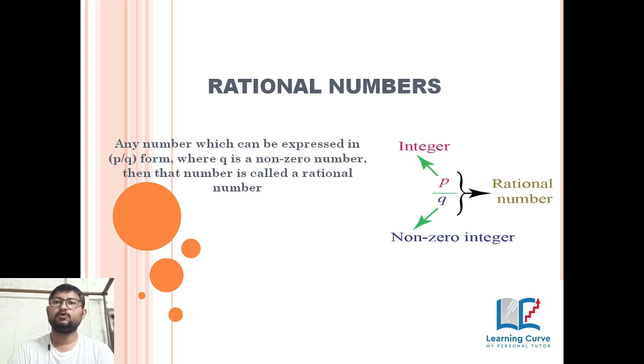We can write 4 by 1. 2 by 3 - this is a fraction. These are all rational numbers. Anything that can be written as p by q form, that is a rational number, but the denominator cannot be zero.